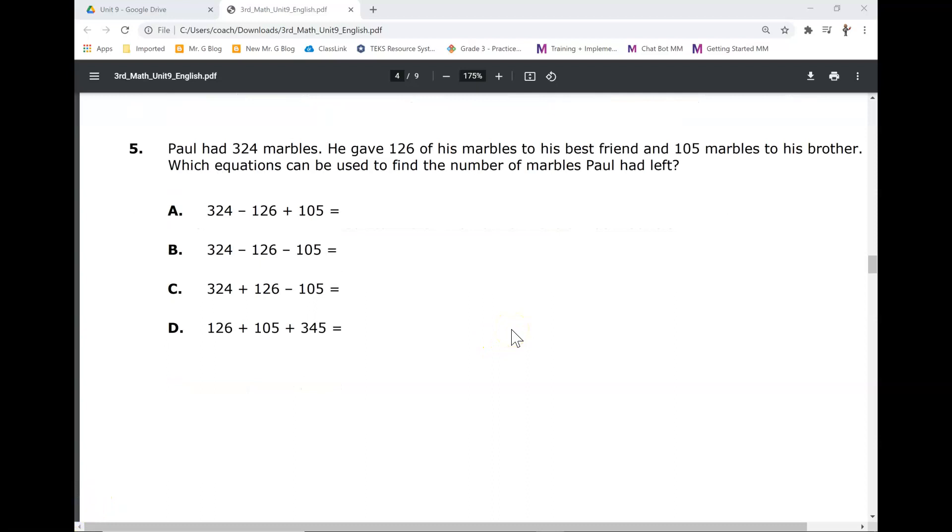Number five. Paul had 324 marbles. He gave 126 of his marbles to his best friend and 105 marbles to his brother. Which equations can be used to find the number of marbles Paul had left?